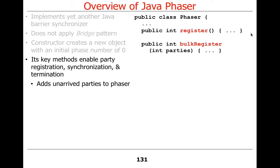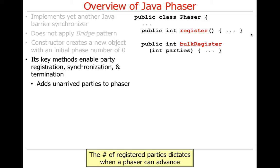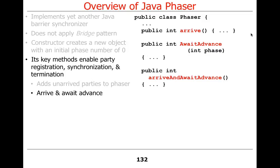The first set of methods allow unarrived parties to register. An unarrived party is one that hasn't shown up to wait yet — they've just shown up to register. There are two forms: register one (register me), and bulk register where you can give a pile of parties at once. The number of registered parties dictates when the phaser can advance. When enough parties have arrived and waited — when that equals the count of parties — then advancement is considered.